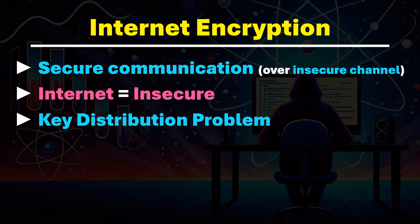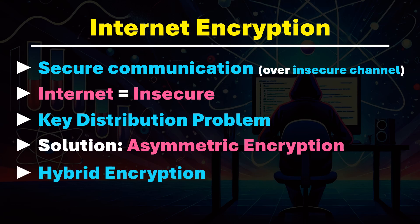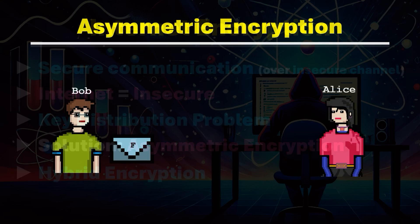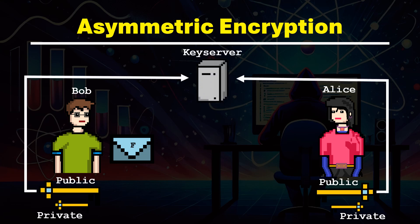A common solution is to encrypt the key of the symmetric method using an asymmetric method, known as a hybrid encryption method. An asymmetric method is based on a key pair consisting of a public and a private key which are mathematically linked. The public keys are stored together on a key server. Let's clarify this with an example.